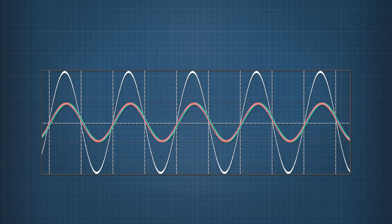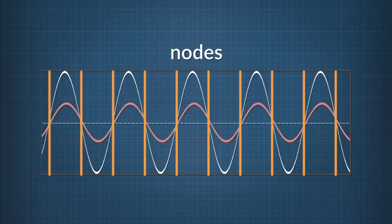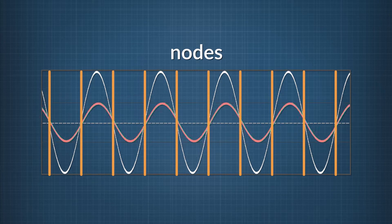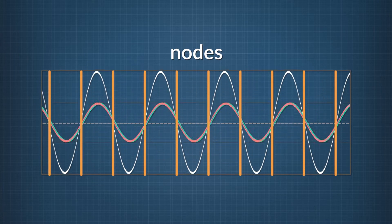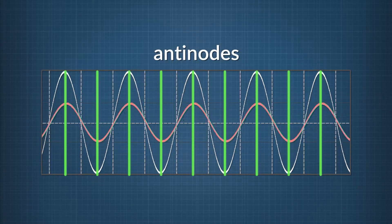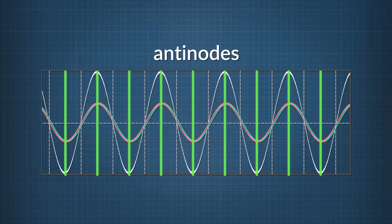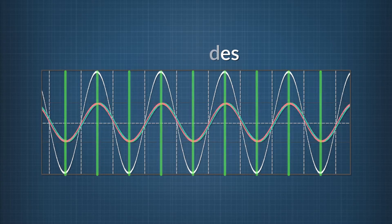So a standing wave is a wave that has nodes, which are points that don't move at all, and results from destructive interference. And antinodes, where the wave amplitude is biggest, thanks to constructive interference.